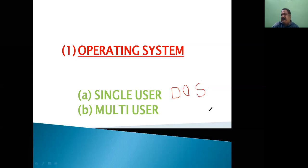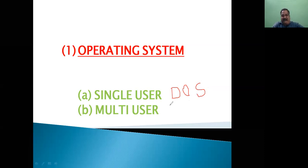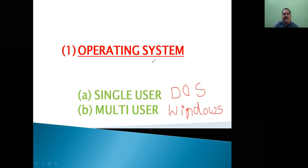Single user operating system does not support other operating systems — such as DOS. The second type is multi-user operating systems, which are those operating systems that support other operating systems — such as Windows. These operating systems support other operating systems.